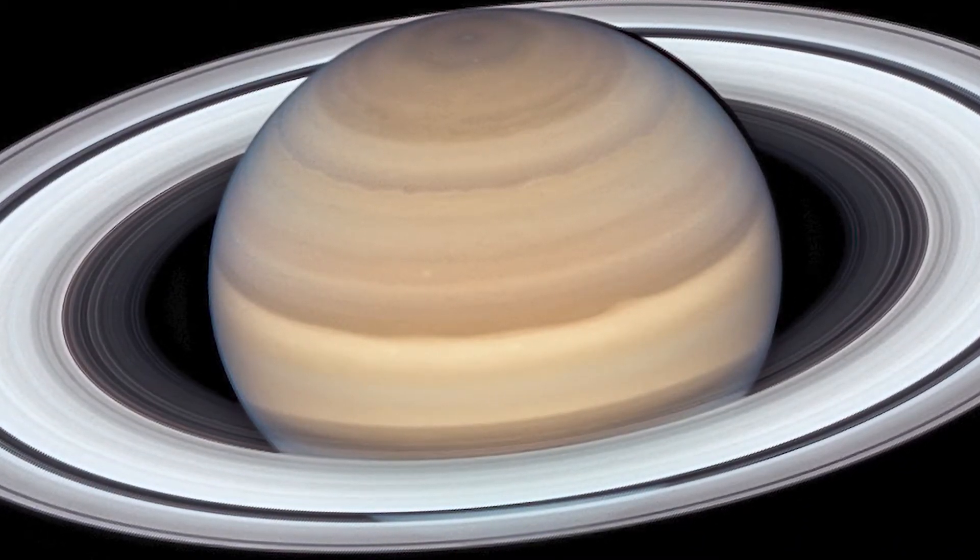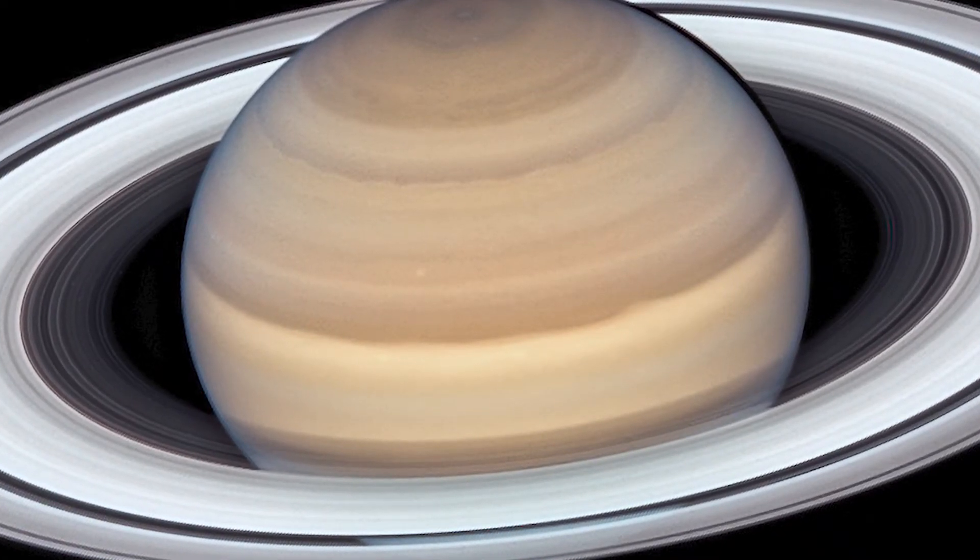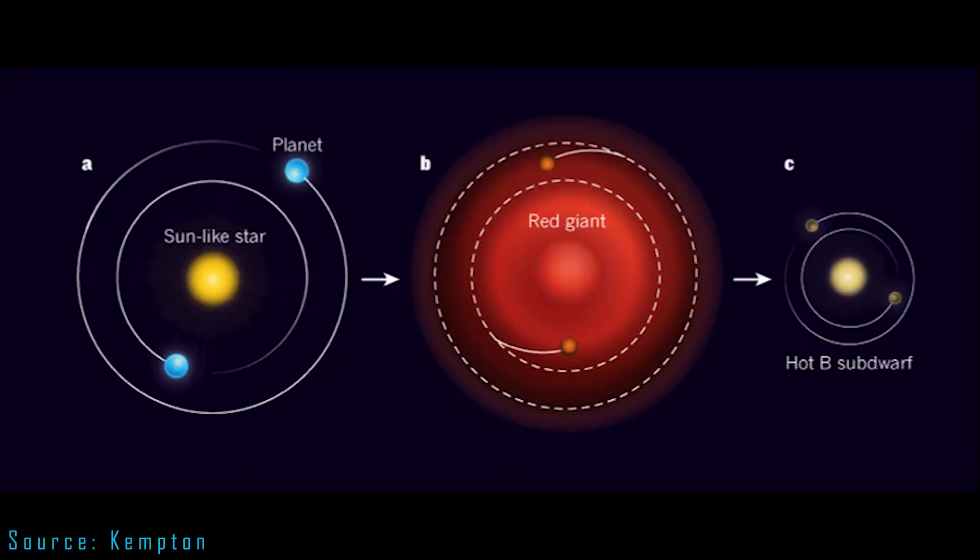In fact, at one point during this phase the star became so big that it engulfed the two planets. So essentially during this stage the two planets were inside the star.